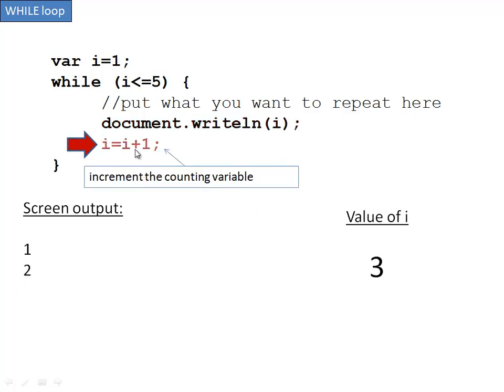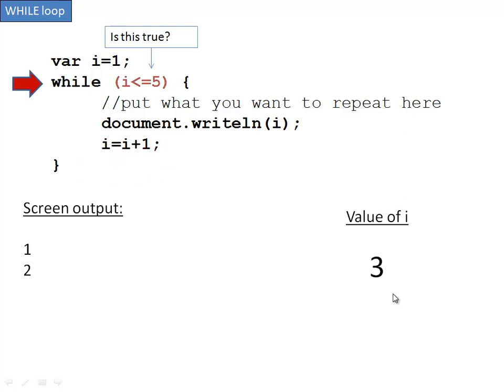And it increments i, so it adds 1 to i, puts it back into i. So i is now 3. And this keeps going until this is proven false. Once again, if you did not increment your variable, this could be an unending loop. But in this case, we are.